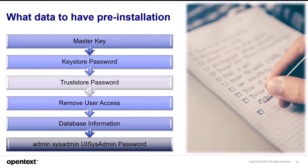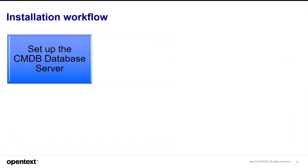You will also need the admin, sysadmin, and UISysadmin passwords. Similar to the above, the policy is that the password must be eight to 16 characters and include at least one of each of the following four types: uppercase alphabetic, lowercase alphabetic, numeric, and special characters — colon, slash, dot, underscore, plus, minus, left square bracket, and right square bracket. After the installation, you may manually change the password from the JMX console or reset the password in the UCMDB local client under Security > Users and Groups. The installation workflow for installing UCMDB begins with setting up the CMDB database server, which must be up and running at the time UCMDB is installed.